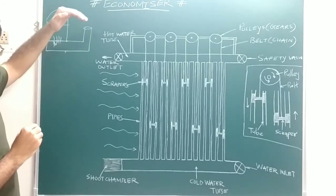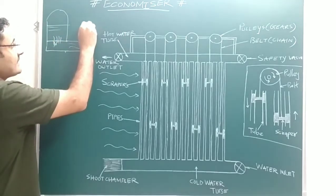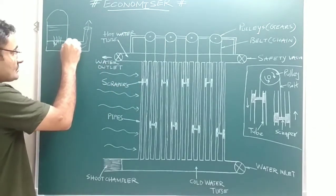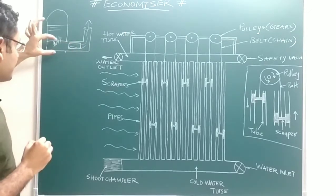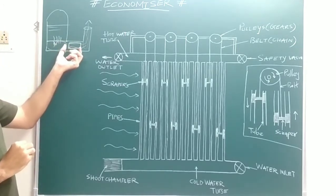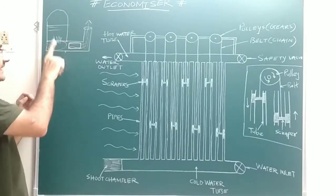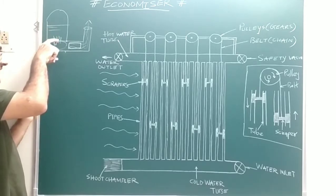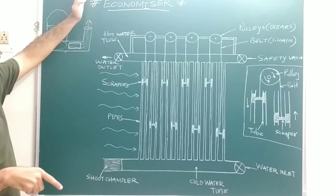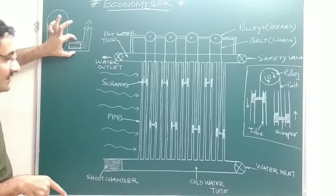Combustion of the fuel takes place in the furnace, so hot fuel gases are produced. Those hot fuel gases heat the water present inside the boiler. After that, whatever waste heat remains in those fuel gases is rejected into the atmosphere through the chimney. So the economizer is located in between the furnace and the chimney.